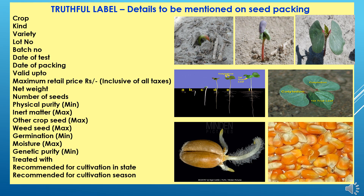Seed quality and seed testing is an important factor for supplying seed to the market. On the label, all quality details should be mentioned, including: crop, kind, variety, lot number, batch number, date of testing, date of packing, validation period, maximum retail price inclusive of all taxes, net weight of seed, number of seeds, physical purity, inert matter, other crop seeds, weed seeds, minimum germination percent, maximum moisture percent, minimum genetic purity, seed treatment chemical details, recommended state for cultivation, and recommended season for cultivation.